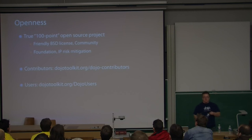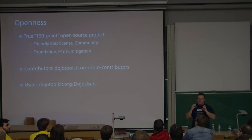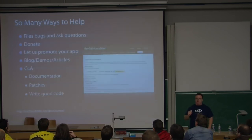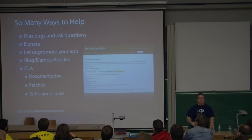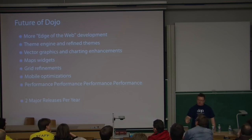Dojo is a true 100-percent open source project — it's open not only in licensing but open for you to use and contribute to, without one company owning the rights. We're always looking for help — we just have a few large companies that contribute developers as well. The future of Dojo: lots of edge-of-web development, lots of enhancements, more work on performance, performance, performance, and easier-to-use APIs.